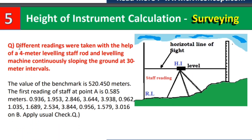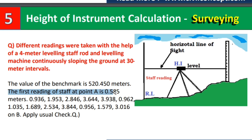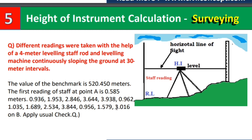Now let us take a numerical example. Different readings were taken with a 4-meter leveling staff rod and leveling machine, continuously sloping the ground at 30-meter intervals. The benchmark value is 520.45 meters. The first staff reading at point A is 0.585, which is our backsight. The intermediate readings follow, and at point B the last reading is 3.016, which is our foresight. We also need to apply the usual arithmetic check.